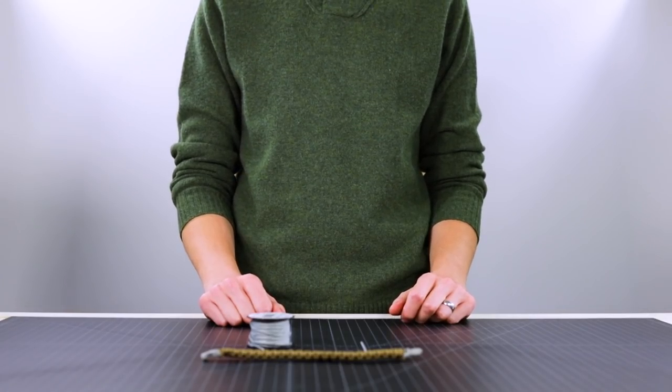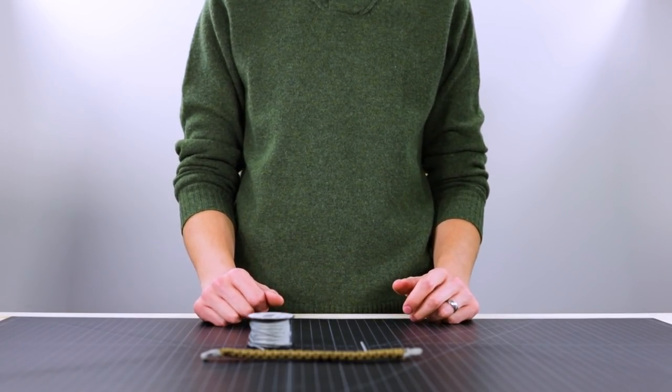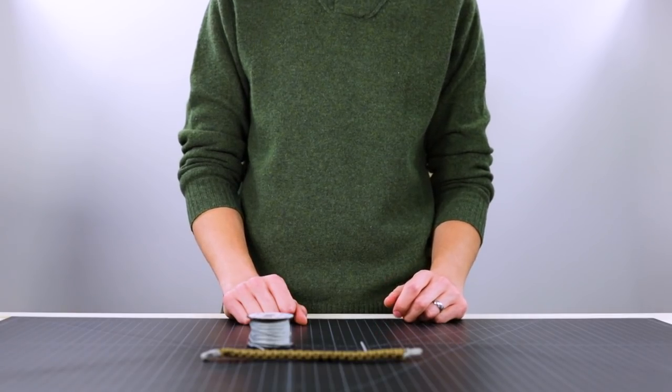This thin cord is rated to hold 90 pounds which means it's great for lashing your survival knife to a spear or for tying gear to your backpack.